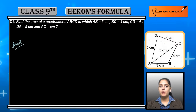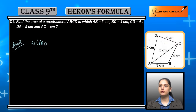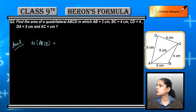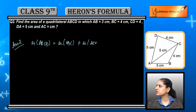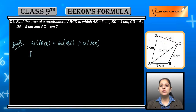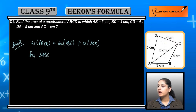First of all, you need to know that any quadrilateral can be separated and divided into two triangles. So the area of ABCD will be equal to the sum of both the triangles' areas — area of triangle ABC plus area of triangle ACD is equal to the area of quadrilateral ABCD.